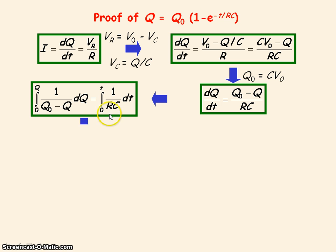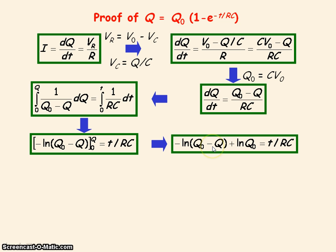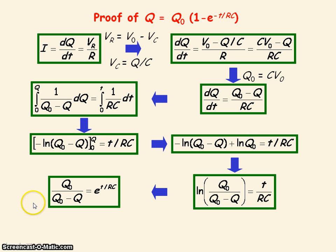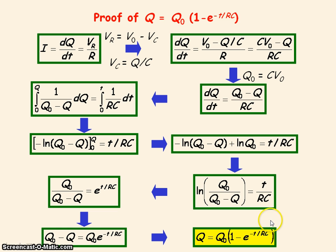Integrating both sides gives us this result. Substituting in the limits for q and putting all the log terms together, we get this expression. To get rid of the log term, we raise both sides as a power of e, then rearrange the equation to make q the subject, giving us the expression for the charge stored on the capacitor while it's charging.